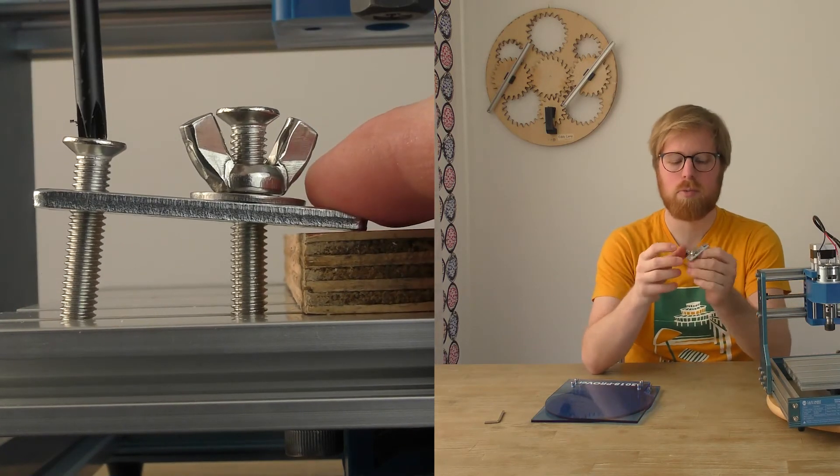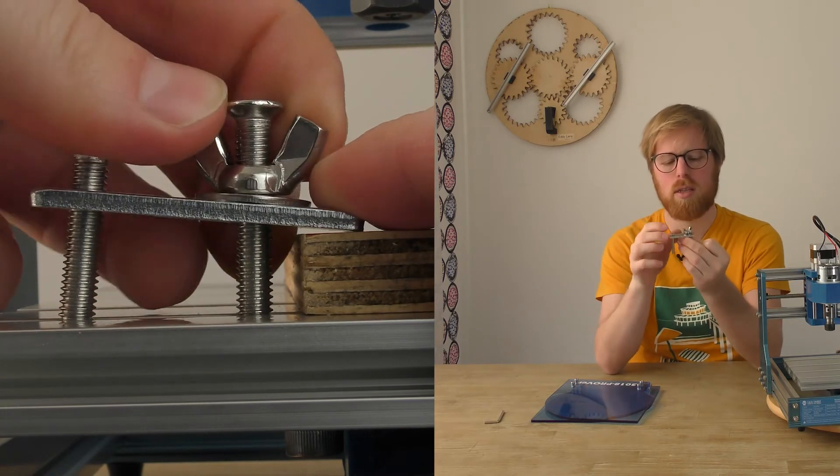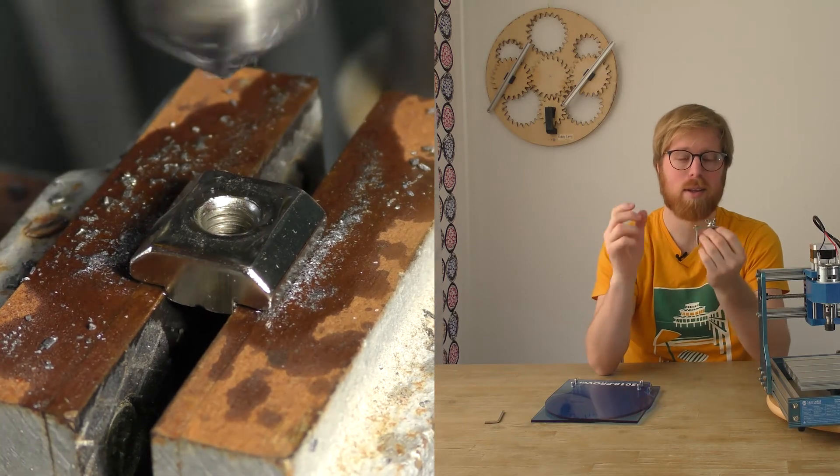They have the same wing nuts so you just pop them in, give them a few turns with the allen key and you're done. It wasn't the only thing I forgot. There were the clamps as well.